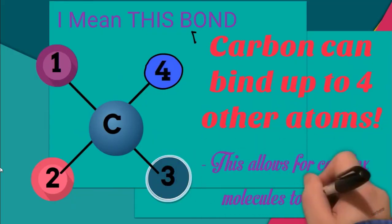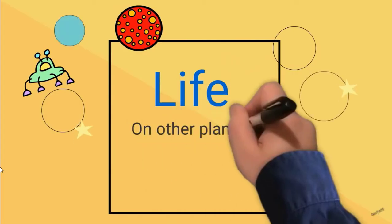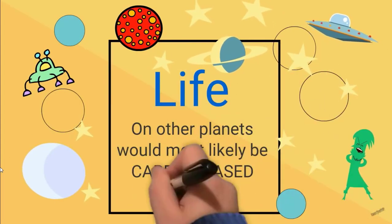Since carbon can bind up to four other atoms, this allows for complex molecules to form. Life on other planets would most likely be carbon-based as well.